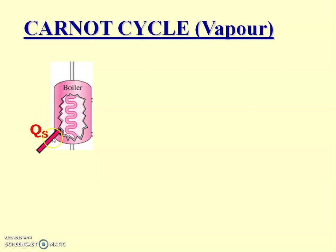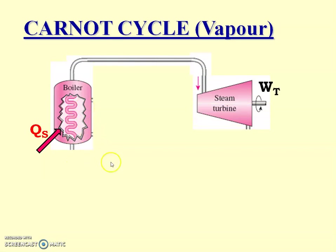The first component is the boiler, in which heat is supplied and water is converted into steam. The second component is the steam turbine, in which the steam generated in the boiler is supplied to the steam turbine, due to which the turbine rotates and gives us work done.